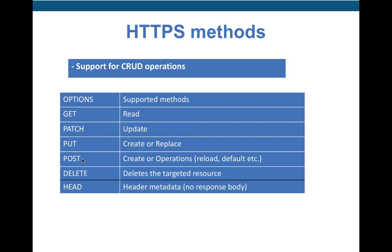The POST method is used to invoke any operation or create any data resource. Invoking an operation is similar to reloading, writing config to save, or running a ping — these are invoke operations you can do with POST. The DELETE method is used to delete the target resource, like deleting an IP address or VRF.